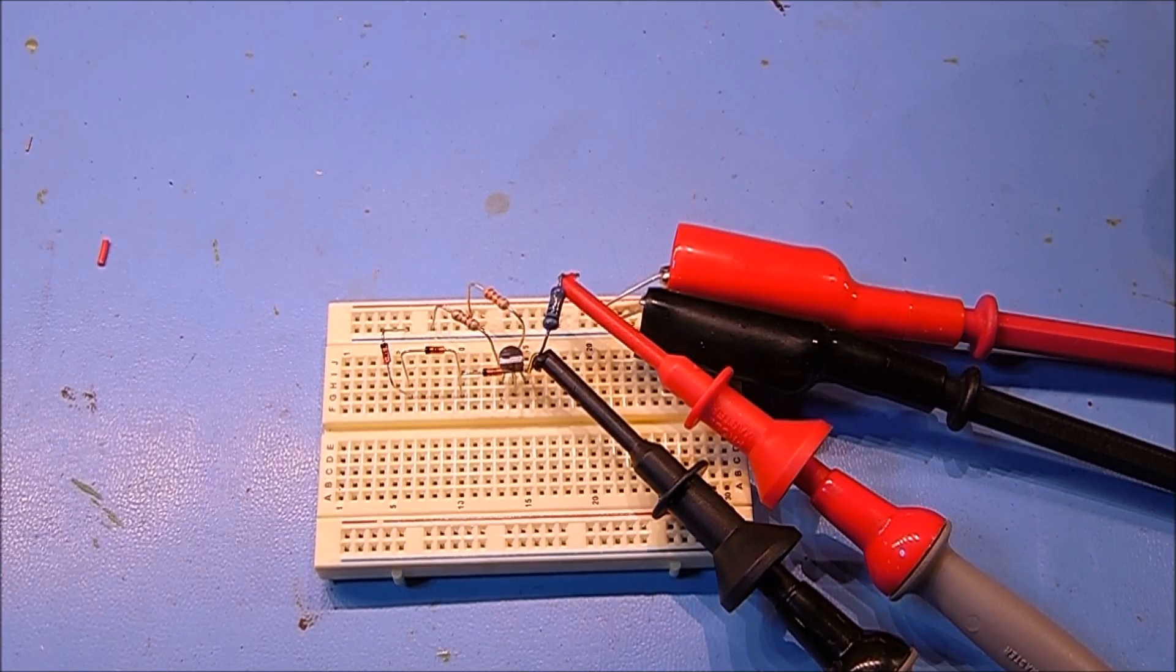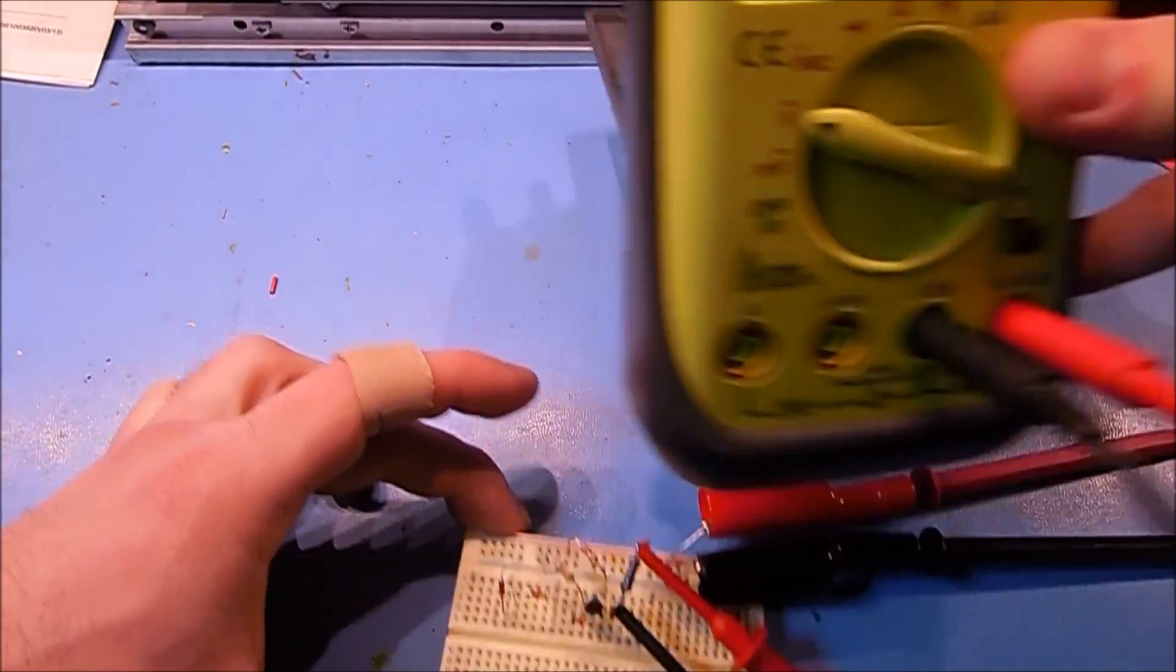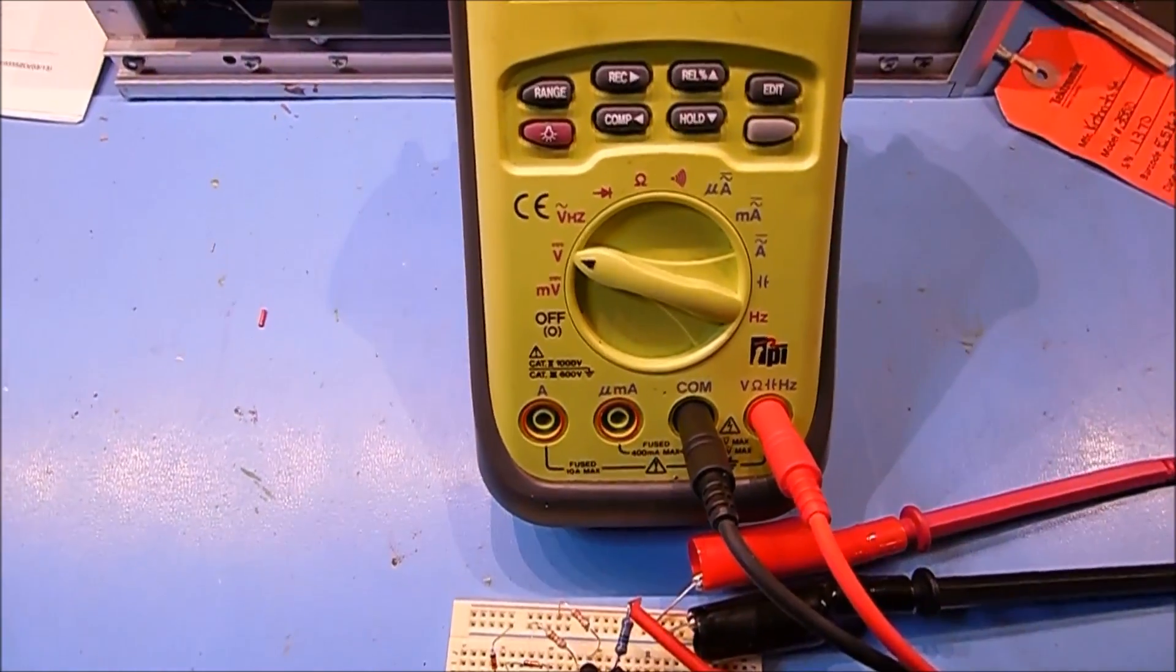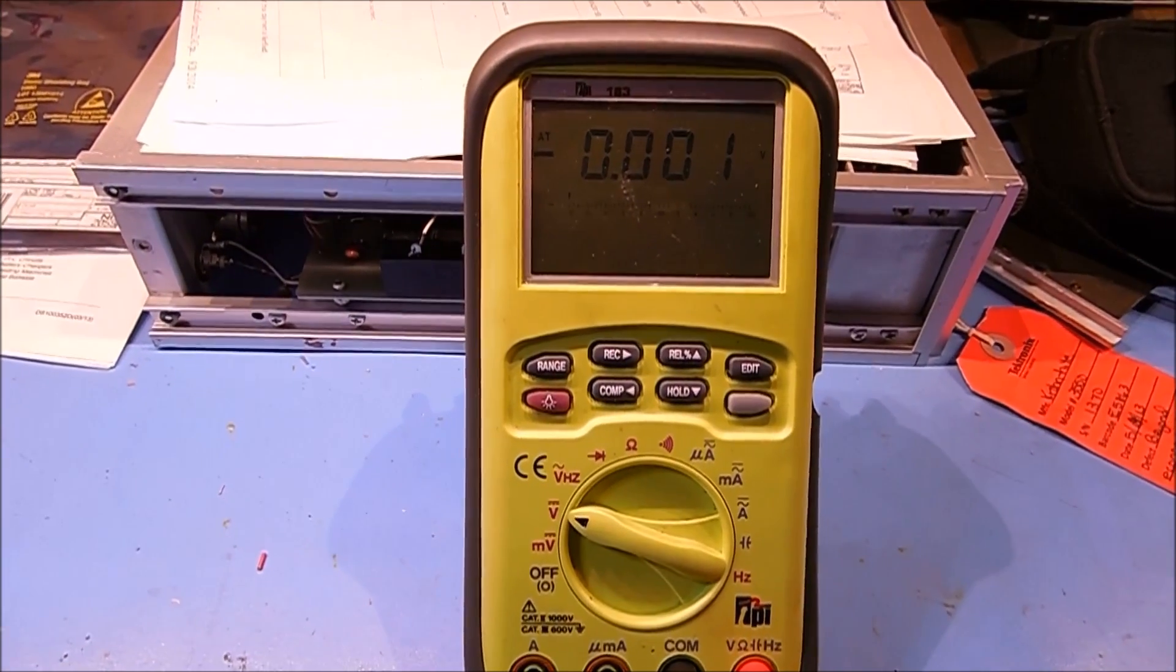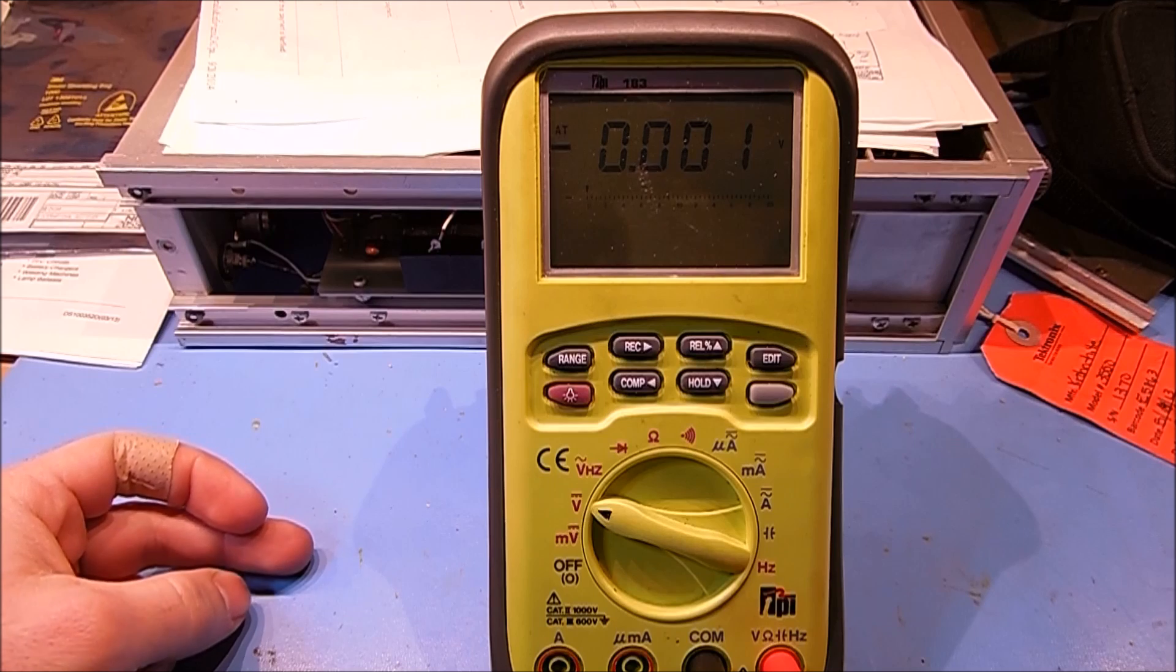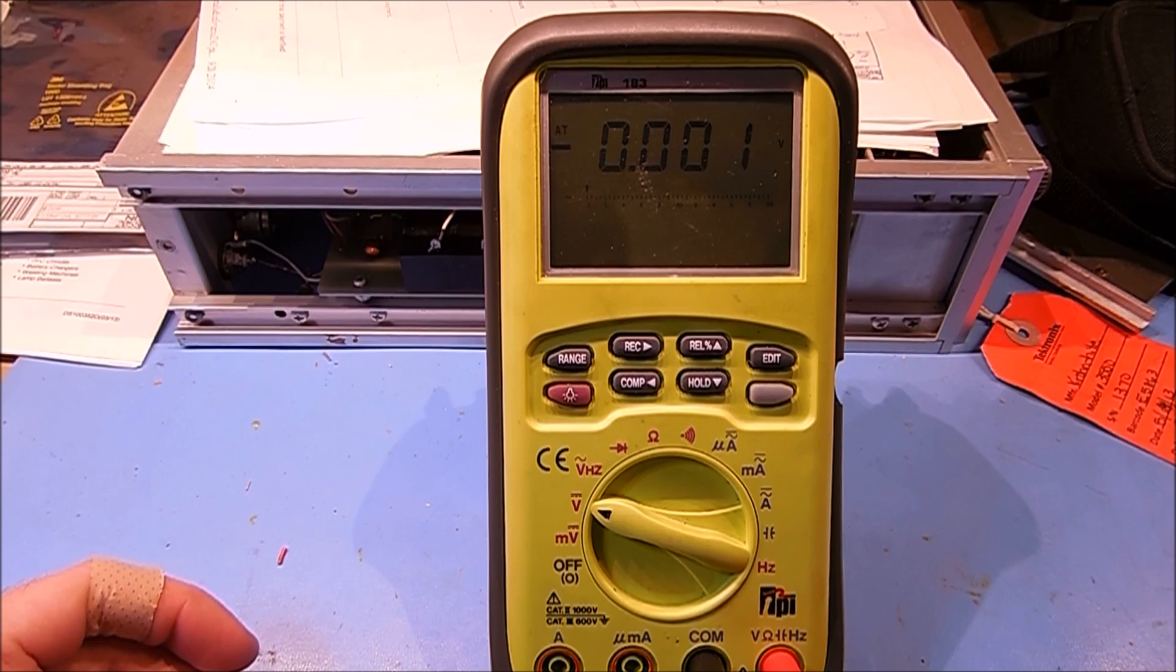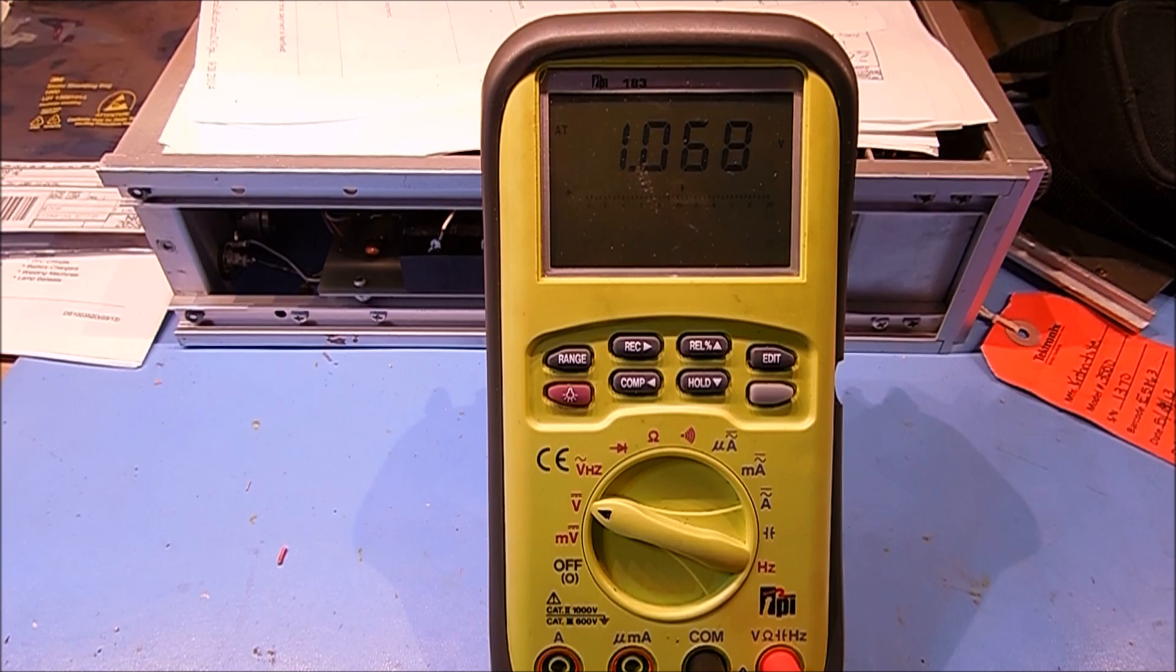I have a multimeter connected across the 100 ohm resistor. We expect our 100 ohm resistor to have 10 milliamps flowing through it, therefore by Ohm's law, generating 1 volt across that resistor. When I turn on the power supply, we read about 1 volt, almost 1 volt.